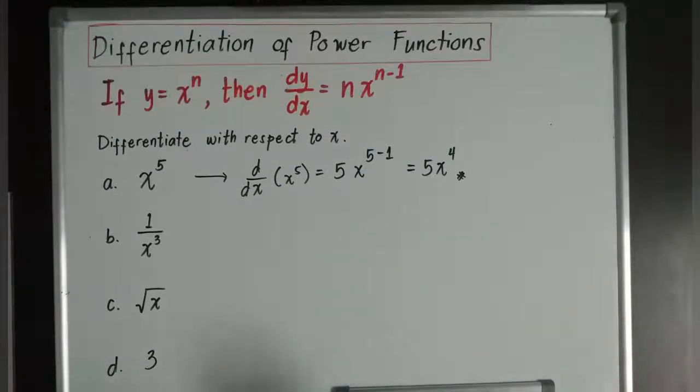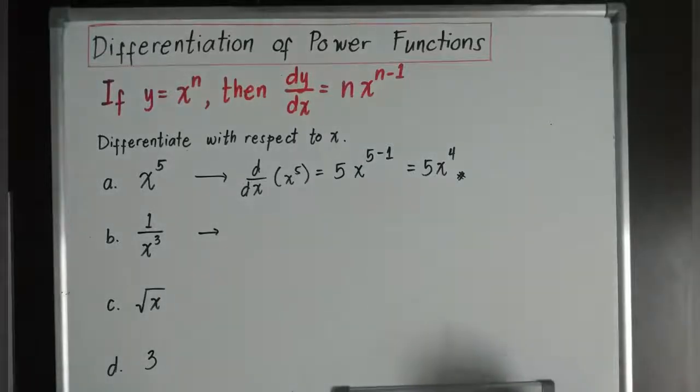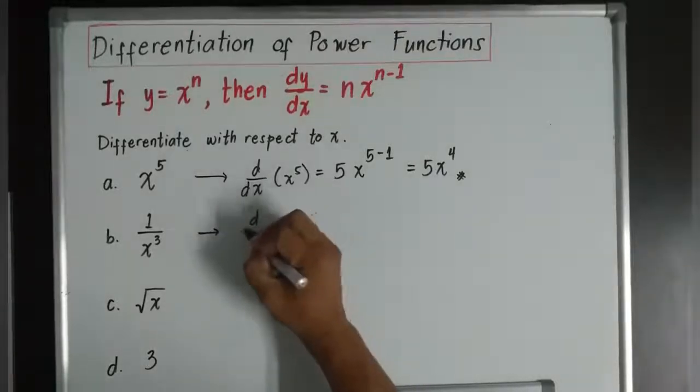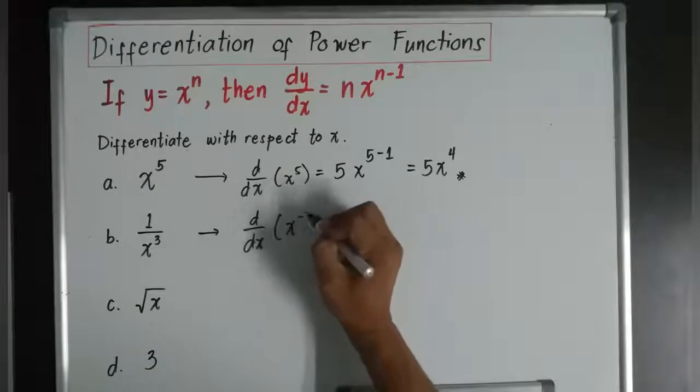Next, how about letter B? D over dx of 1 over x cube is the same as d over dx of x to the power of negative 3.